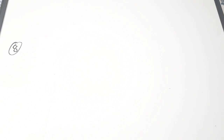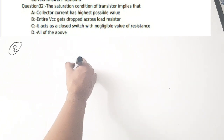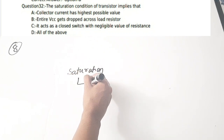Eighth question: the saturation condition of a transistor implies that — A) collector current is at its highest possible value, B) entire VCC gets dropped across the load resistor, C) it acts as a closed switch with a negligible value of resistance. All three statements are correct for saturation.